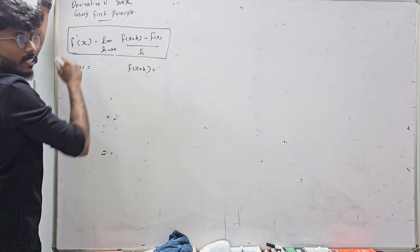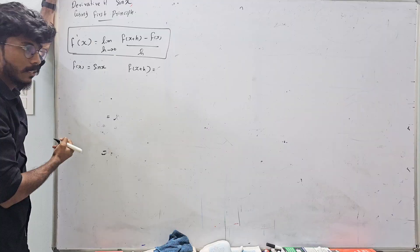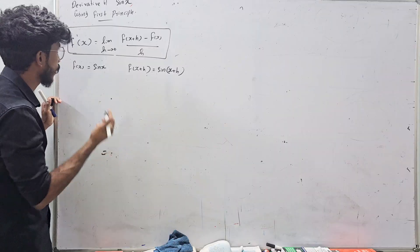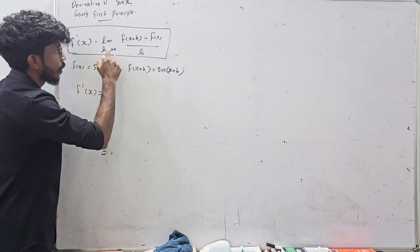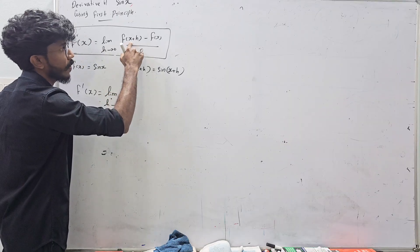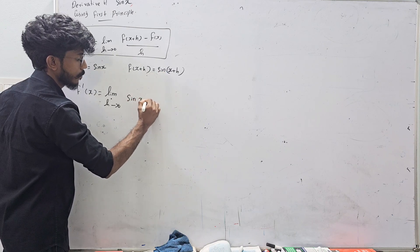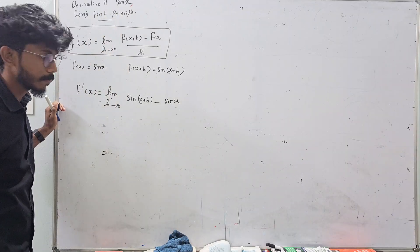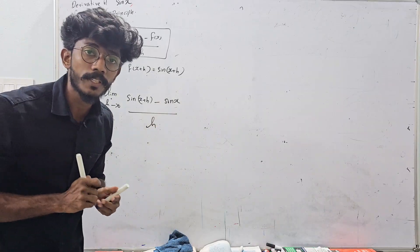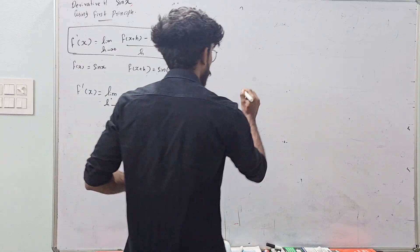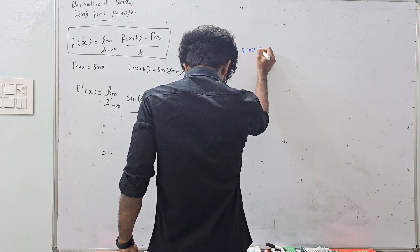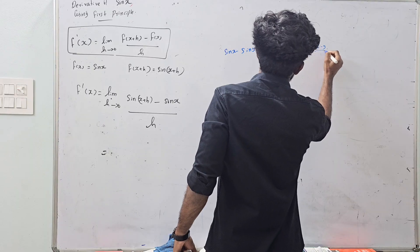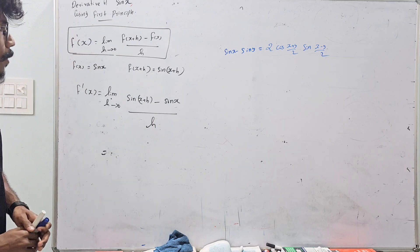Next question: sin x. Then f(x) = sin x, and f(x+h) = sin(x+h). So using first principle, [sin(x+h) minus sin x] divided by h. Now here, what formula is used? sin x minus sin y = 2 cos((x+y)/2) sin((x-y)/2). That's the formula.